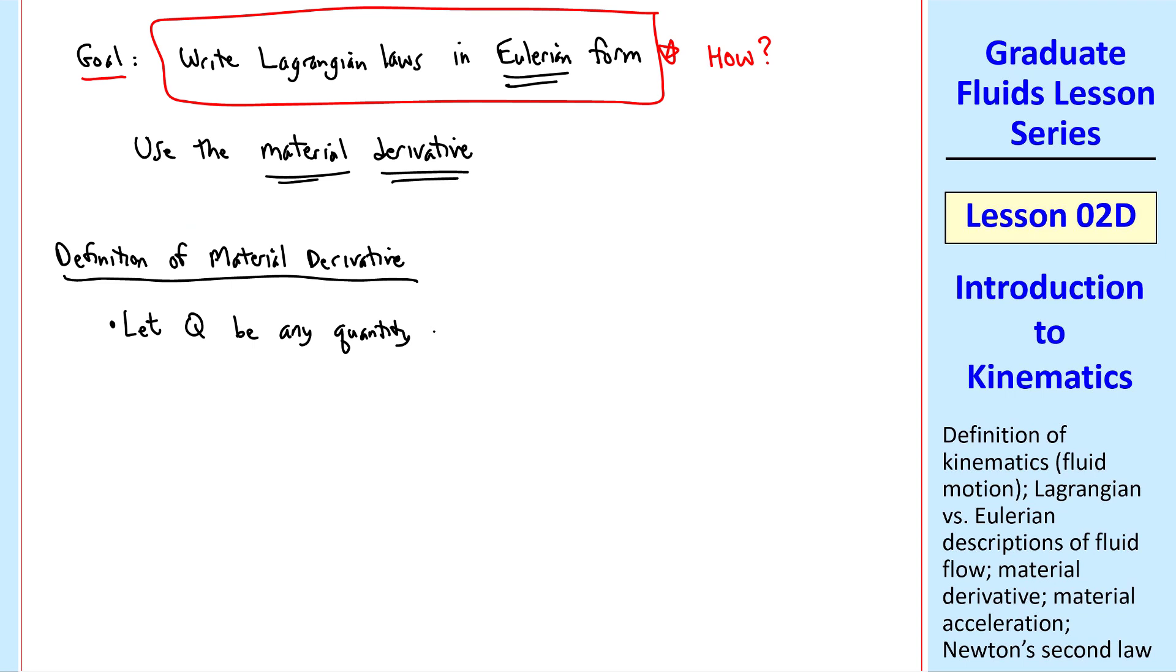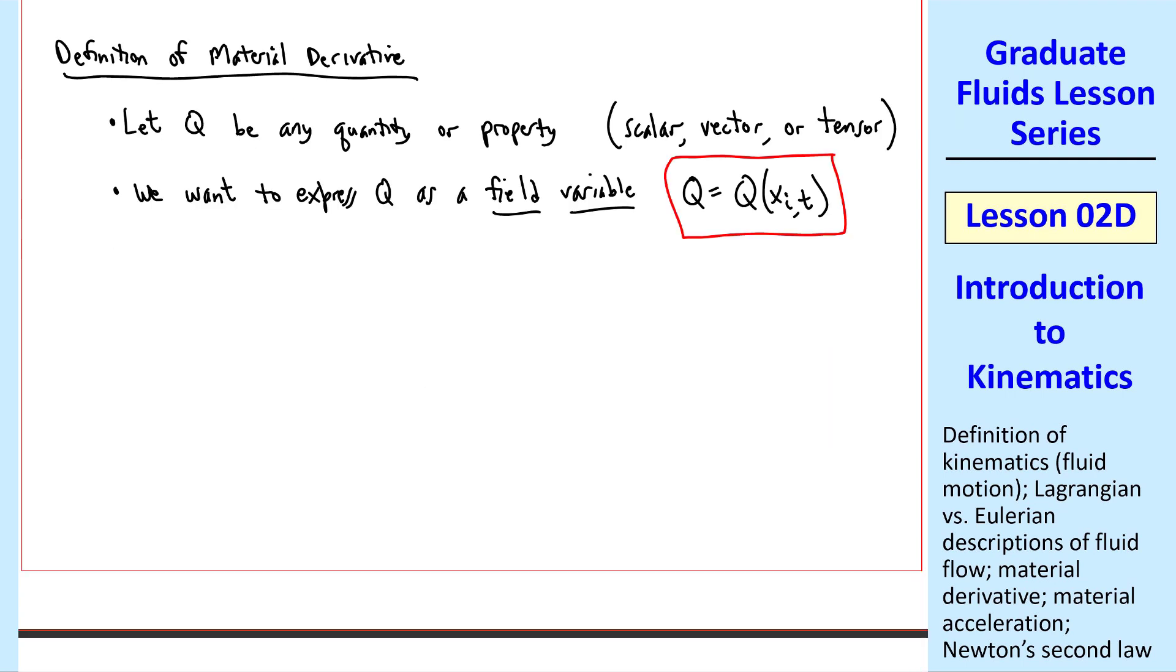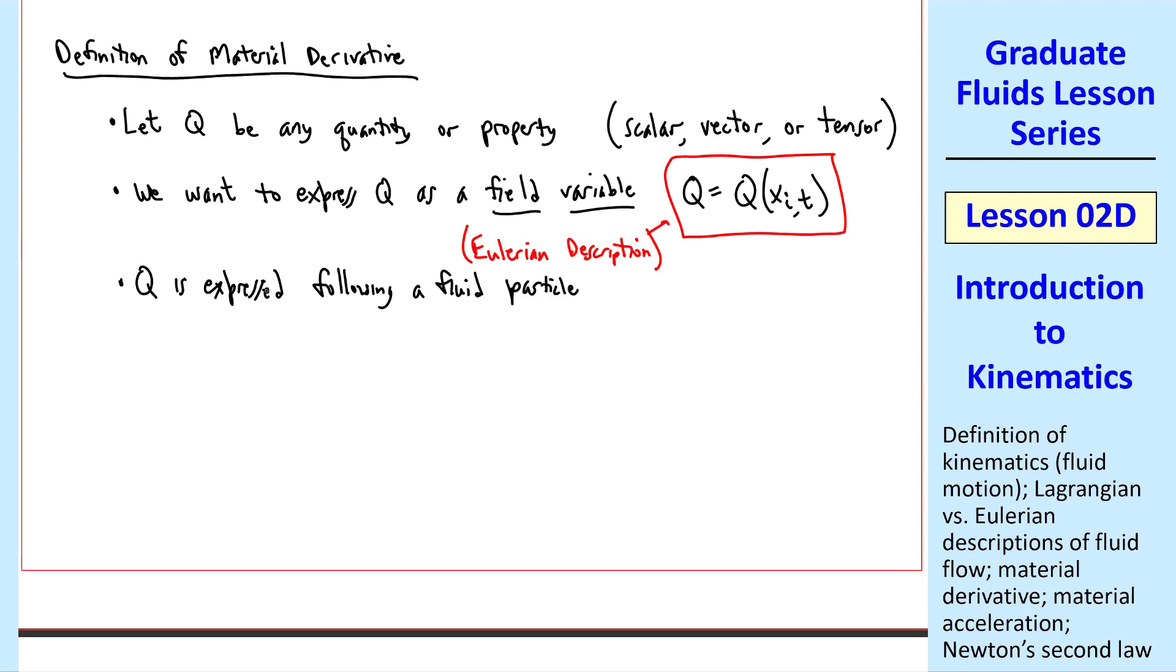Let q be any quantity or property. It can be a scalar, a vector, or even a tensor of any order. We want to express q as a field variable, q equal q of xi and t, as we wrote for velocity previously. This is the Eulerian description, but as we said, q is fundamentally expressed following a fluid particle, which is the Lagrangian description. We'll write it with a subscript p, where p means particle. So qp is qp of xpi and t, where xpi is the position vector of the particle.